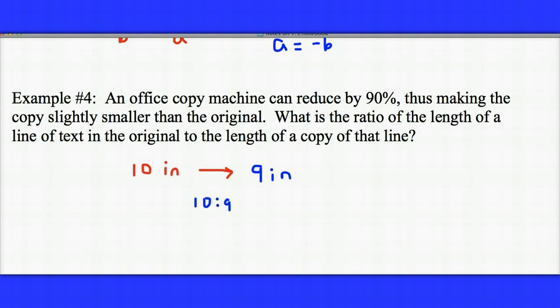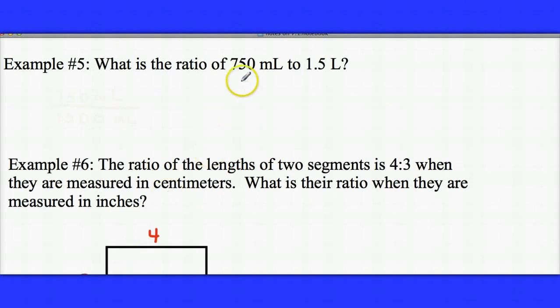Let's take a look at a few more examples. What is the ratio of 750 milliliters to 1.5 liters? Once again, the units are not the same, so I need to either change milliliters to liters or liters to milliliters. I'm going to change the 1.5 liters to milliliters. 1.5 liters is the same as 1,500 milliliters. That's because there's 1,000 milliliters in every liter.